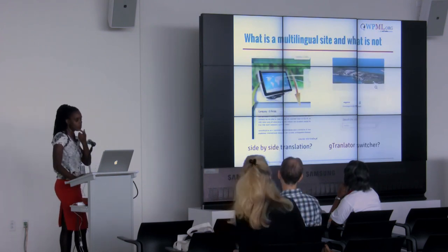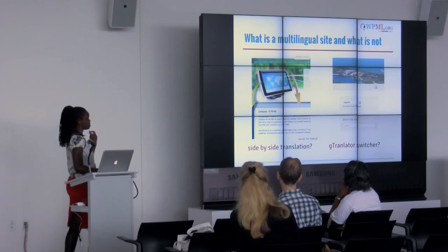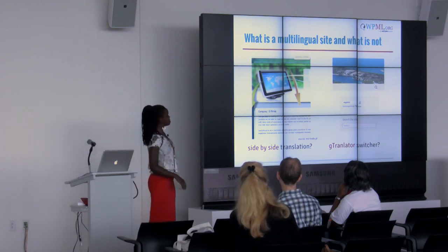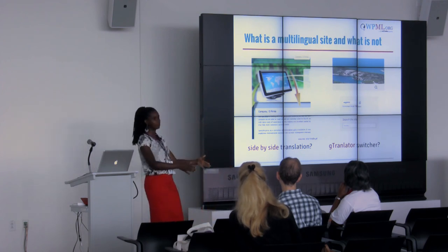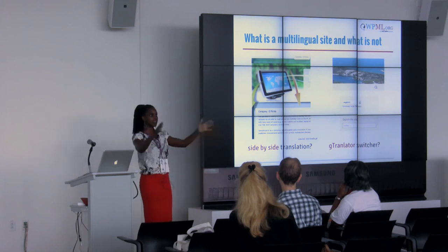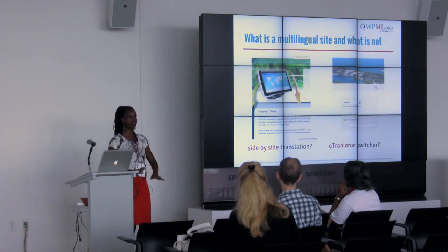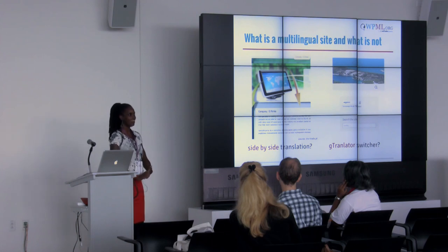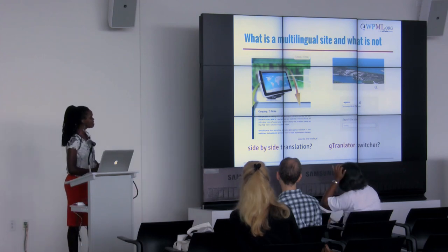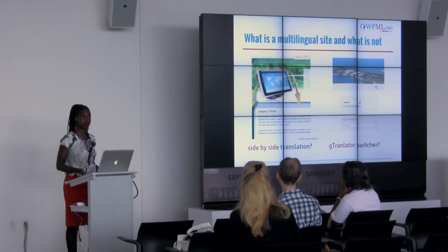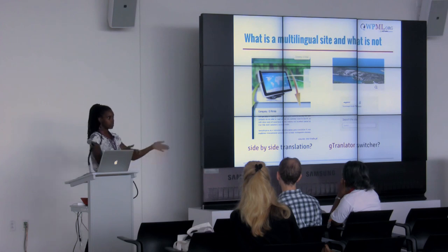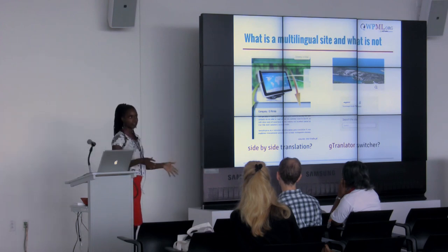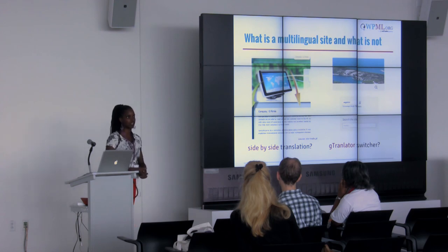So what is multilingual and what is not? I'm sure you've seen a side-by-side translation — one column with your English text and another column with your Spanish or German text. People do that because it's very simple: you go into the WordPress user interface, type your text, translate it, and then type your Spanish text, and you have it all there.